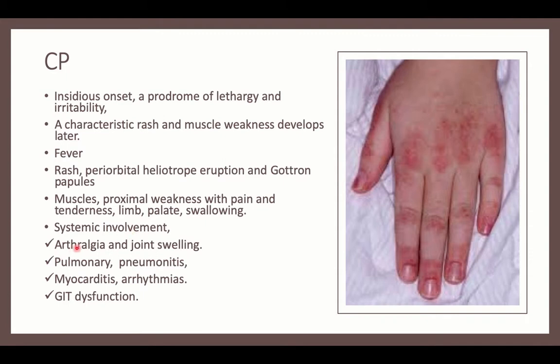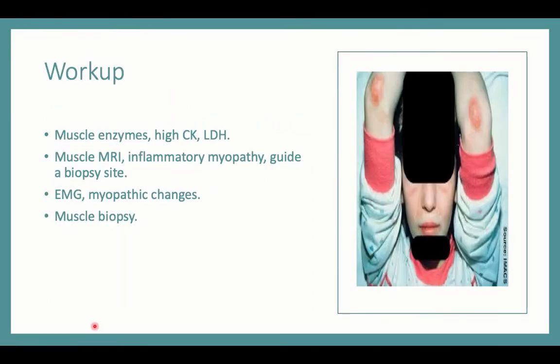Other systemic involvement, as a form of vasculitis, includes arthralgia and joint swelling, pulmonary pneumonitis with inflammatory infiltrates, myocarditis presenting with arrhythmias, and GI tract dysfunction — all manifestations of vasculitis.